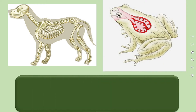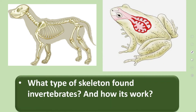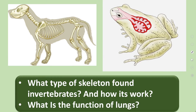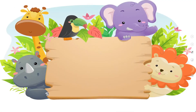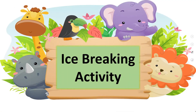Look at the pictures and tell me: what type of skeletons are found in vertebrates? Internal skeleton — it gives support and shape to the body of vertebrates. Then, what is the function of lungs? They are the breathing organ and they help in gas exchange.